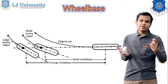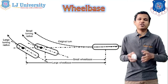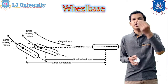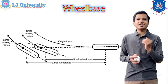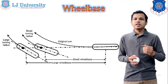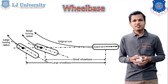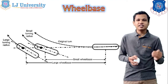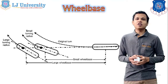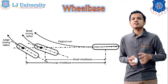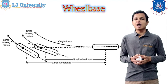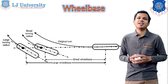During acceleration and braking, the load transferred from the rear to the front side can be reduced with a larger wheelbase. In the case of a smaller wheelbase, the advantage is that the turning radius is smaller and maneuverability is easier. So depending on the requirement, the wheelbase will be decided.